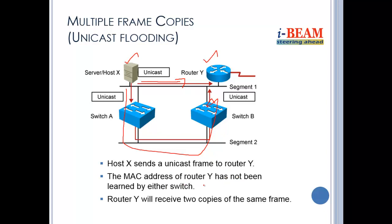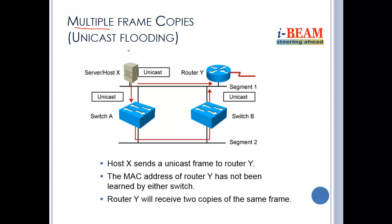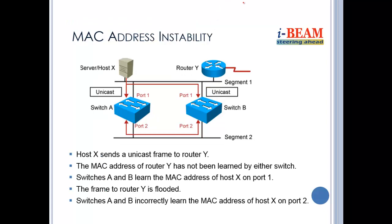If you want to address MAC address instability, you need to handle it within one frame. A host can receive two copies of the same frame. This creates multiple frame copies, which leads to MAC address instability.